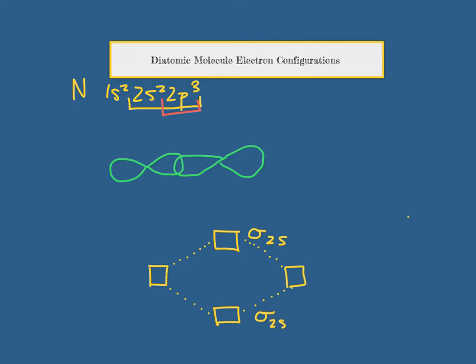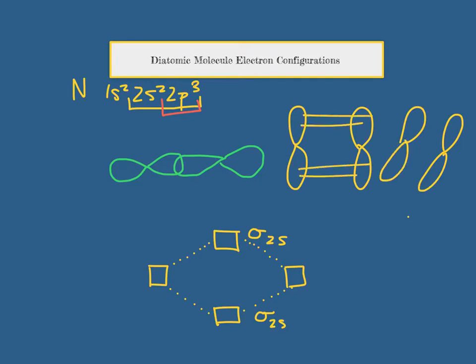However, the p orbitals that are in the other two directions, the one up and down and the one into and out of the board, those interactions are a little less direct. We call those interactions pi bonds. There's two different pi interactions that can happen and one sigma for the p orbitals.